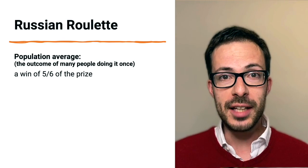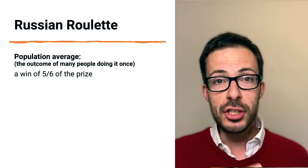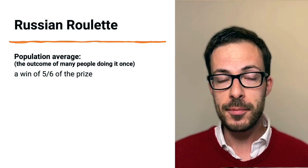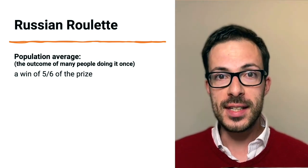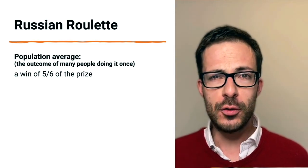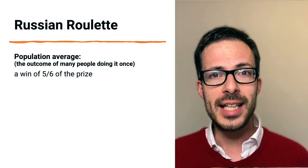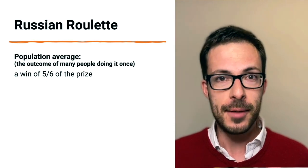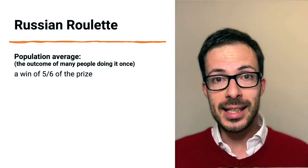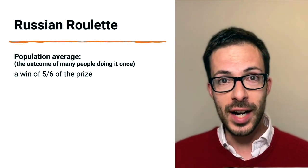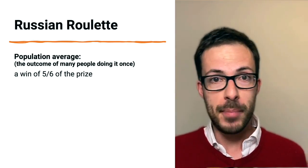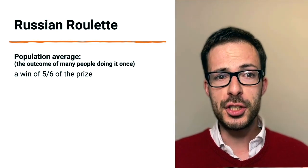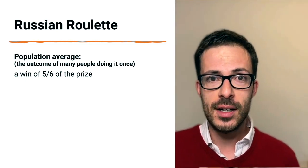So let's try to do that for Russian Roulette. The population average of Russian Roulette, which is the outcome of many people doing it once, is a win equal to five-sixths of the prize. That is because, for example, if we have six people playing Russian Roulette, we will end up with one person which is dead, and five people which win a prize of, let's say, $1,000 each. The total is $5,000. And if we divide it by six people, we get basically five-sixths of the $1,000 prize.